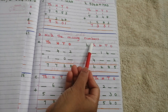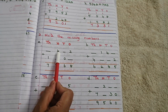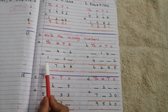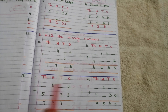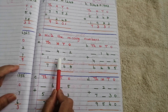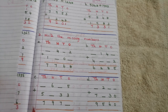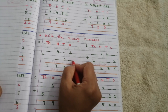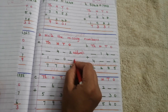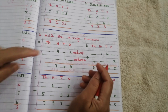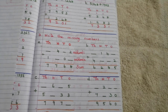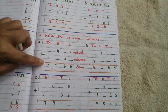Third problem: write the missing numbers. Problem A has missing digits in two numbers, and the answer is 7,768. These two numbers are called addends — addend 1 and addend 2. When we add them, we get the sum as the result. Some digits are missing in the addend portion and we need to find them.